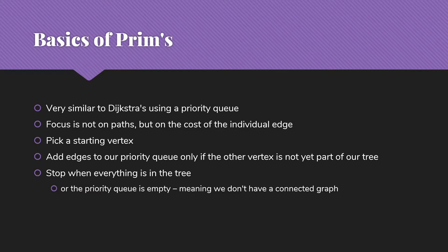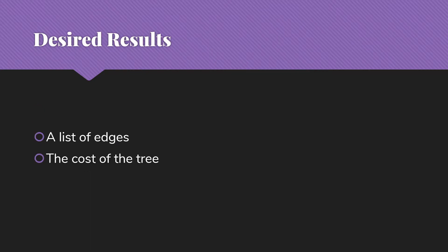We're going to pick a starting vertex. It doesn't really matter which one for this purpose. We're going to add edges to our priority queue only if the other vertex of the edge is not yet part of our tree. So whenever we add a vertex to our tree, we're going to look at all the edges out of that vertex, including only the ones where we're getting somewhere new. So that's very similar. We're going to stop when everything is in the tree. So that's similar to stopping when we found paths to all the other vertices. Or if the priority queue is empty, which in this case would mean that we don't actually have a connected graph.